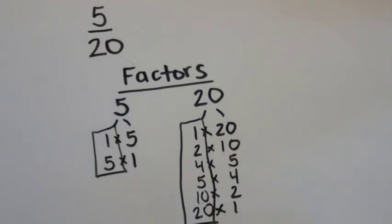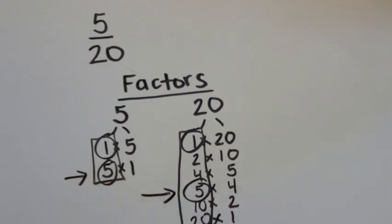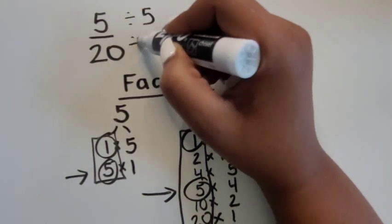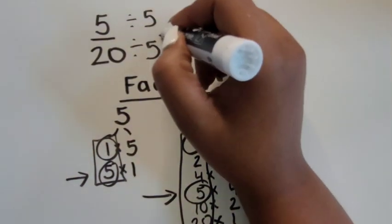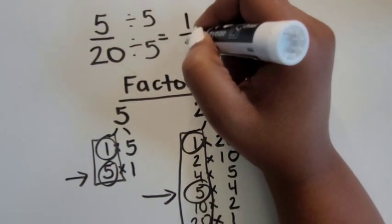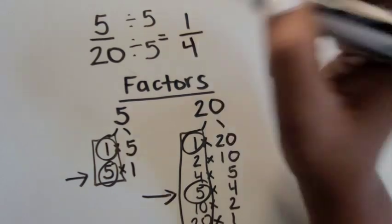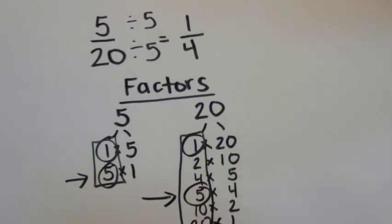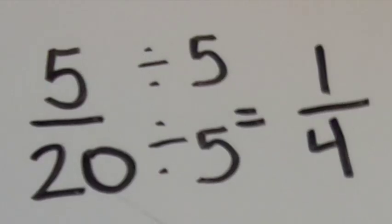We see which numbers are repeated to be represented as factors. Which ones do they have in common? 1 and 5. 5 is their greatest common factor, so we will use 5 to divide the numerator and denominator by equally. 5 divided by 5 is 1 and 20 divided by 5 is 4. A simplified fraction for 5 twentieths is 1 fourth.